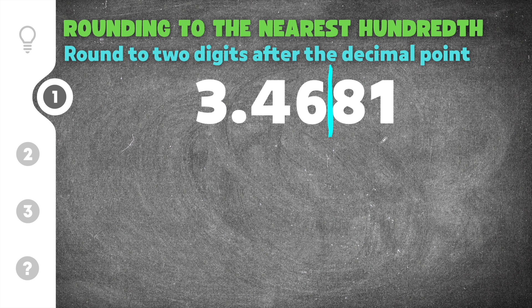I look at the thousandths place, and it will tell me whether that six stays the same or rounds up to a seven. Eight is above five, which means we're going to round the six up.